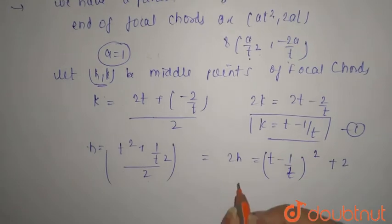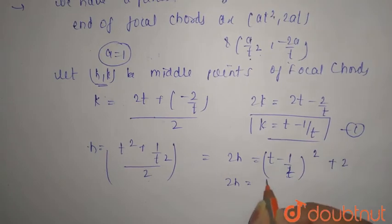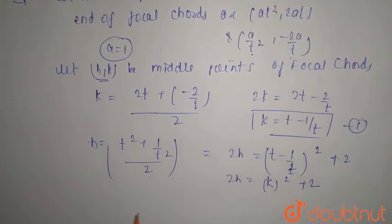So 2h = (t - 1/t)² + 2. From the first equation, (t - 1/t) = k, so 2h = k² + 2. To get the equation of the locus,